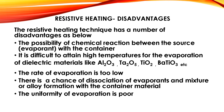These are the disadvantages of the resistive heating method. The resistive heating technique has a number of disadvantages: the possibility of chemical reaction between the source or evaporant with the container; it is difficult to attain high temperatures for evaporation of dielectric materials like Al₂O₃, TiO₂, barium titanate, etc.; the rate of evaporation is too low; there is a chance of dissociation of evaporants and alloy formation with the container material; and the uniformity of evaporation is poor.